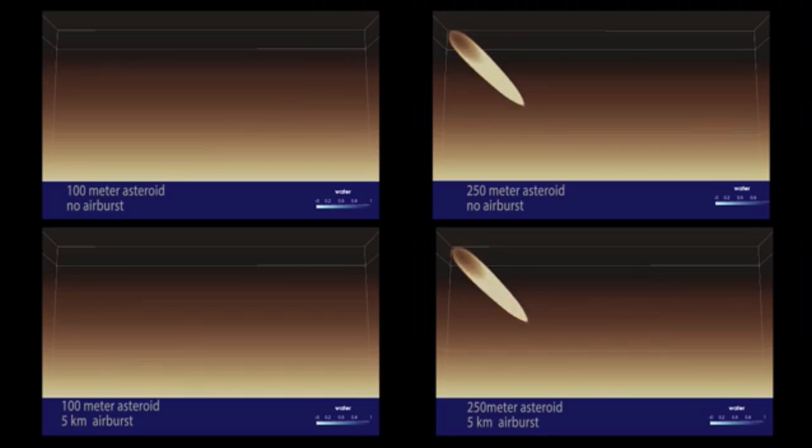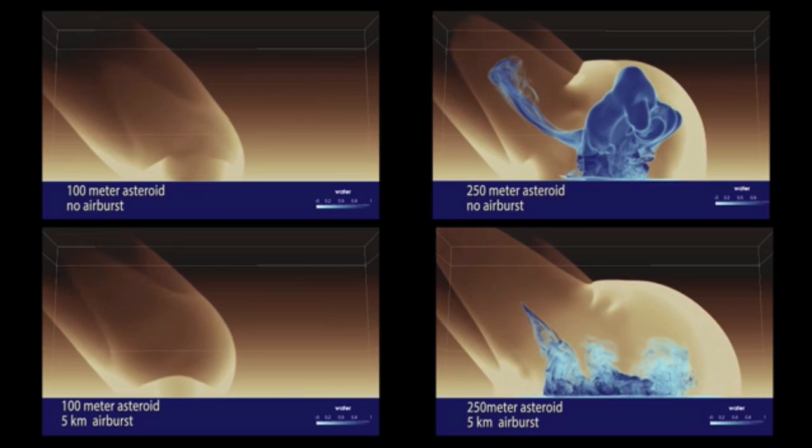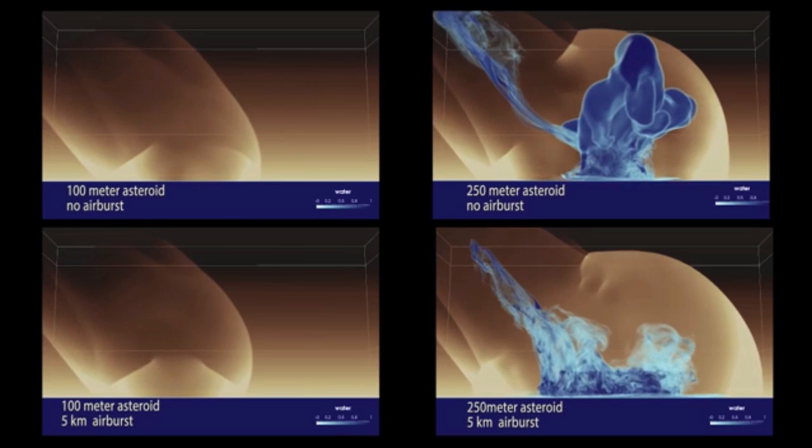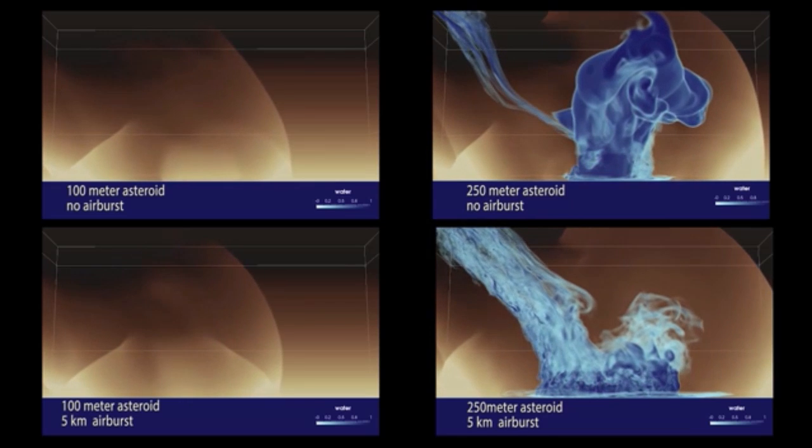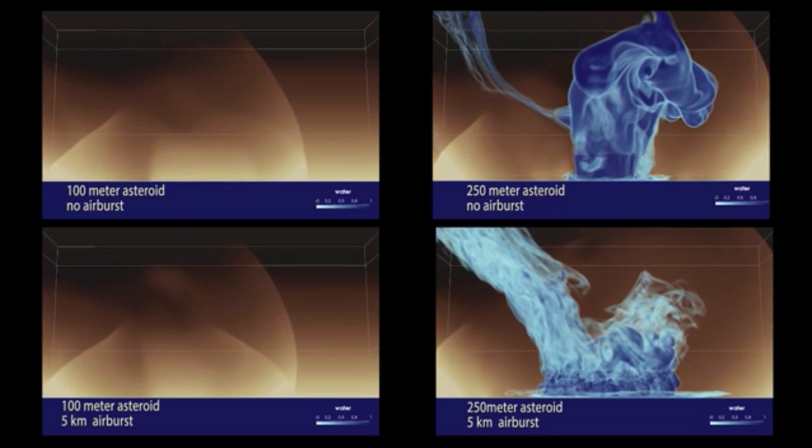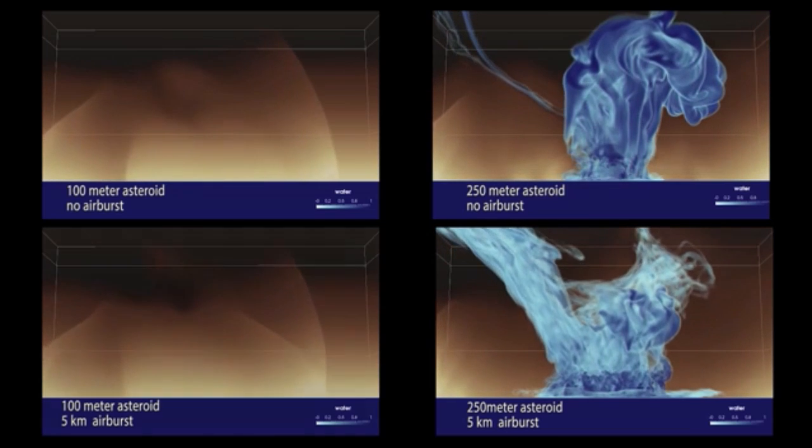By studying different runs from the ensemble, we see the effects of varying asteroid size, angle of impact, and airburst. Here, a light-colored pressure wave shows the asteroid's effect on the atmosphere. In addition, a large plume of water rises from the largest asteroid impact. Clearly, more kinetic energy is transferred to the water in this simulation.